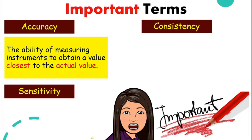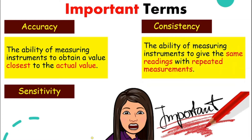How about consistency? Consistency is the ability of the instrument to give you the same reading when you repeat your measurements. So for the 10 cm pencil, when you measure it the first time it gives you 10 cm, second time still 10 cm, third time still 10 cm. That means this instrument has high consistency.